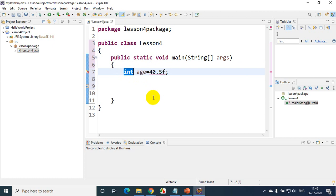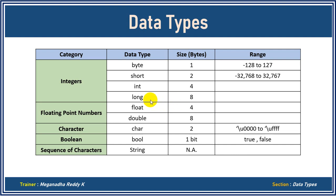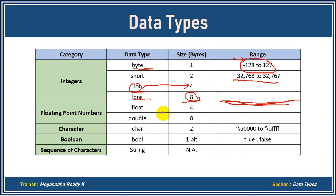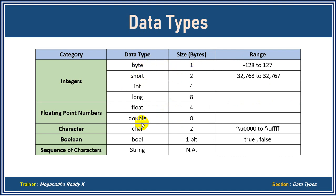Let's go to the presentation to see what data types we have in Java. You can see these are the data types. Integer takes four bytes. If I want small values within a limited range, I can use byte, which takes one byte of memory and can store values from -128 to 127. Short takes two bytes of memory and can store a wider range. Long takes eight bytes of memory and can store a very large range. Float and double are used to store decimal values. Char is used to store a single character. Boolean is used to store true or false — it takes one bit of memory. And String will store a sequence of characters, with size depending on the number of characters assigned.